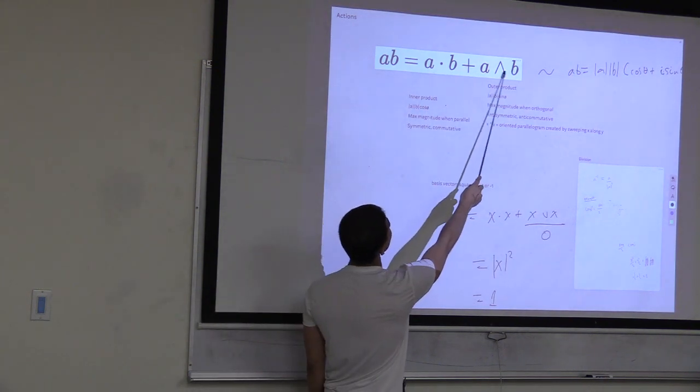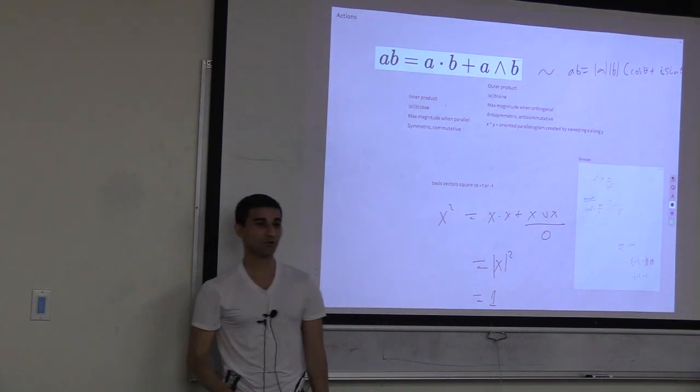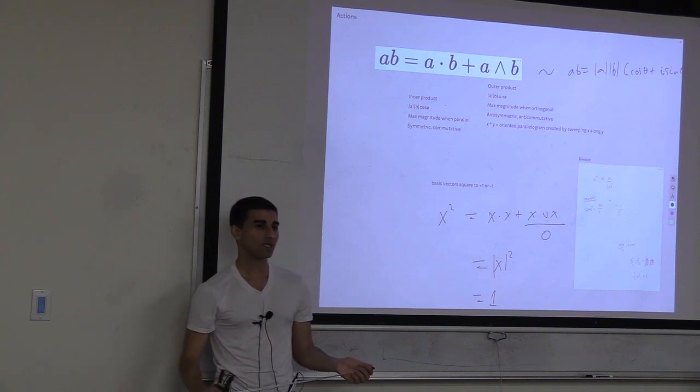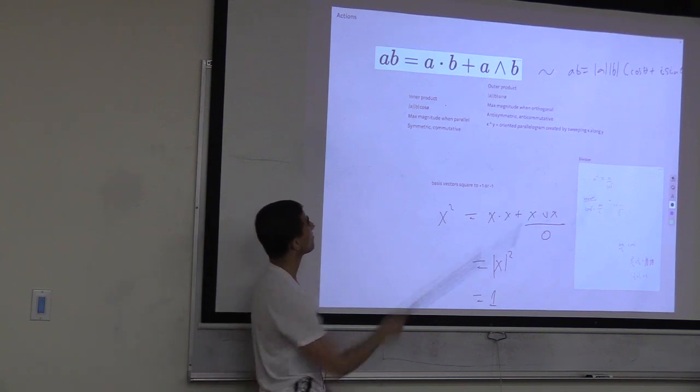This is called the wedge product, or the outer product. This is the new bit - you've probably seen the dot product before.